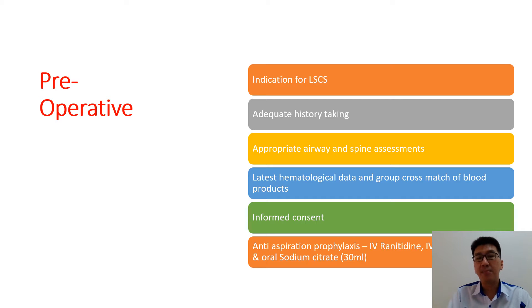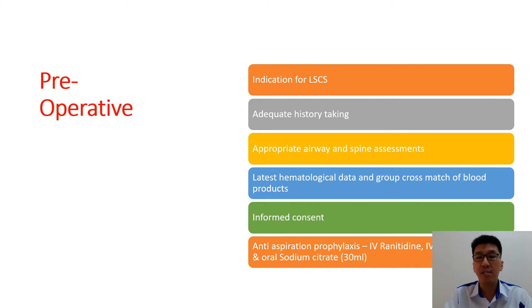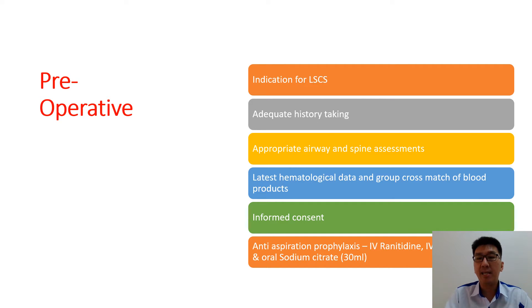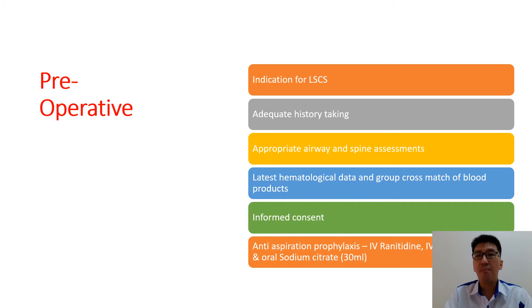Preoperatively, as per regional anesthesia, we must ensure the indications for lower segment Caesarean section and perform adequate history taking, appropriate airway and spine assessments, and include the latest hematological data such as hemoglobin and platelet levels. The patient must have at least a cross-match of blood products such as packed cells. Informed consent must be obtained, and anti-aspiration prophylaxis such as ranitidine, maxolon, and oral sodium citrate of around 30 ml must be given approximately 15 minutes before sending the patient to the operating theater.